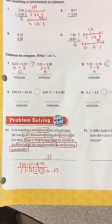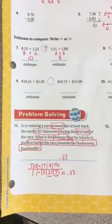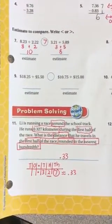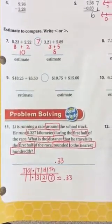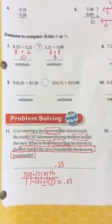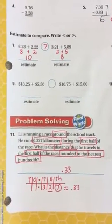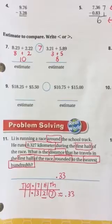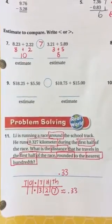Now for problem solving. The question is what is the distance that he travels in the first half of the race? Round it to the nearest hundredth. So now let's look at our facts. Lily is running a race around the school track. He runs 327 thousandths kilometers during the first half of the race.